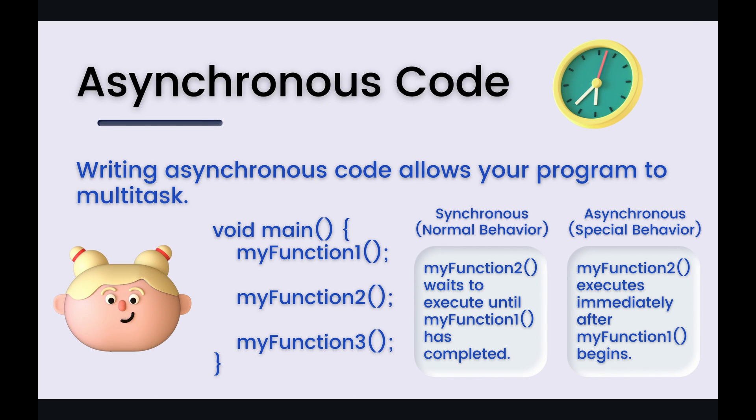The Dart programming language by nature runs and executes code synchronously. That means it'll go line by line and wait until a previous line of code has completed running and executing before moving on to the next line of code. And that is known as synchronous.